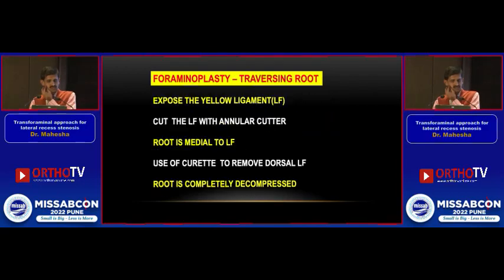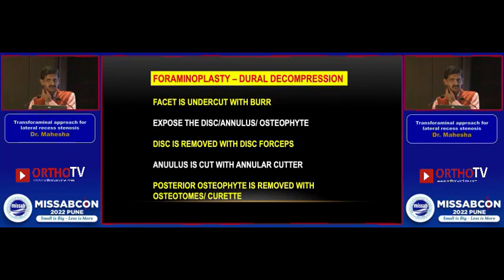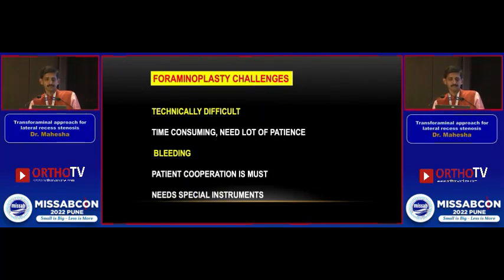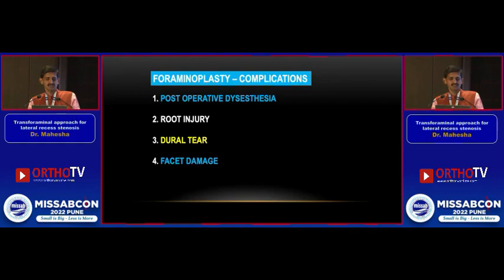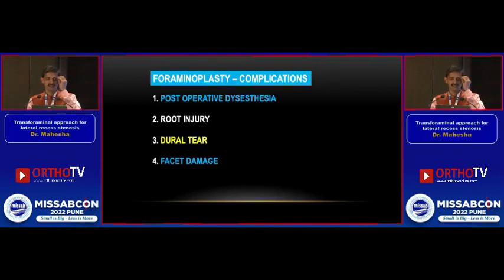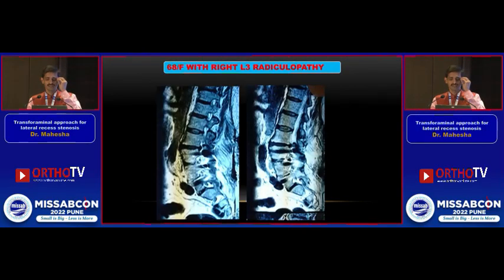We have to decompress both the roots. The ligamentum flavum has to be cut; medial to the ligamentum flavum is your traversing root. Challenges: it is technically difficult and time consuming. There is bleeding. Patient cooperation is a must because we do it under regional or local anesthesia. We need special instruments. Complications: there can be post-operative anesthesia, root injury, dural tear, and facet damage. These are rare, not very common.